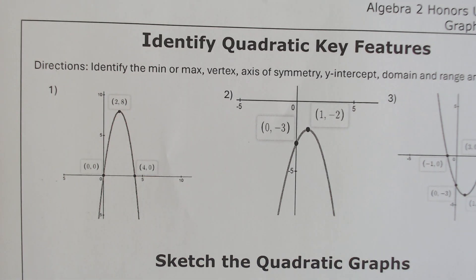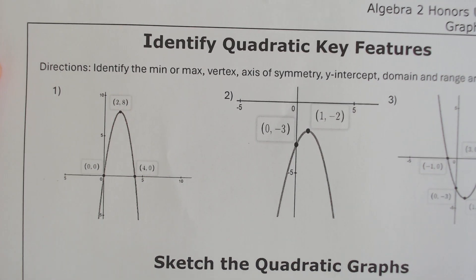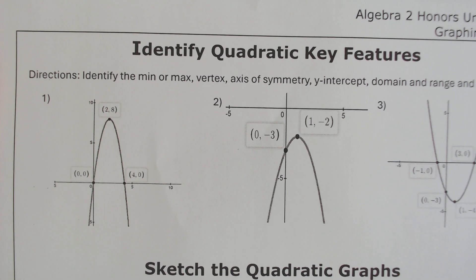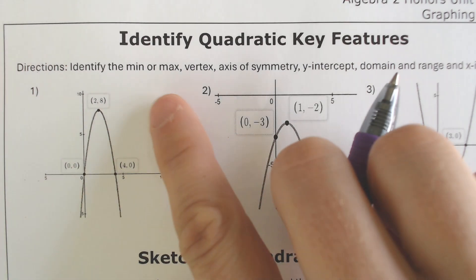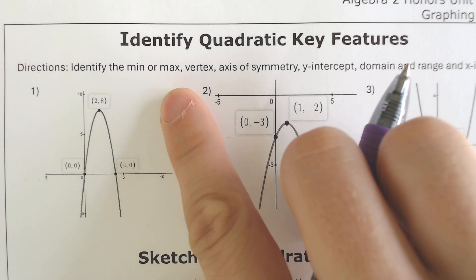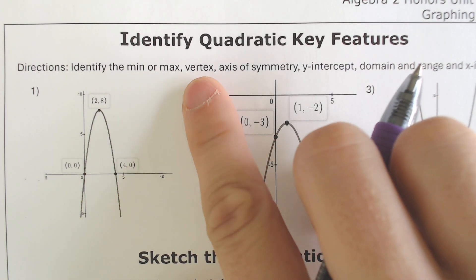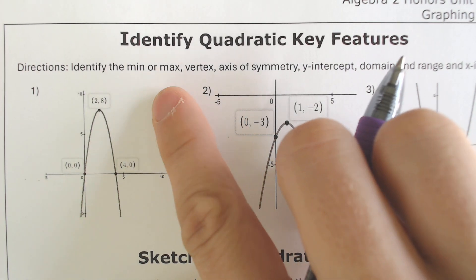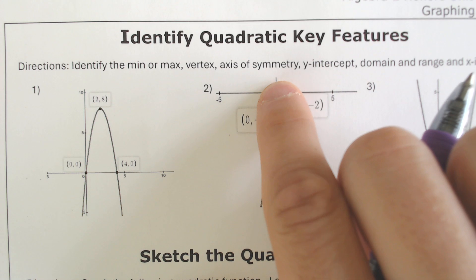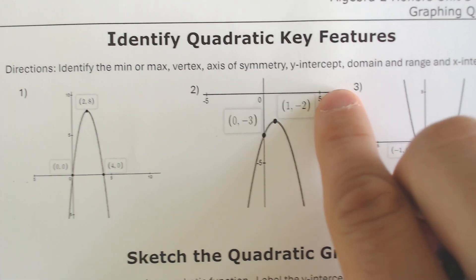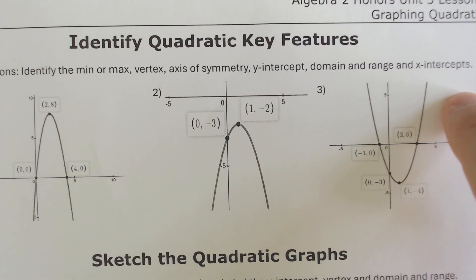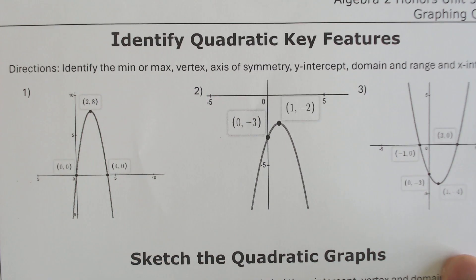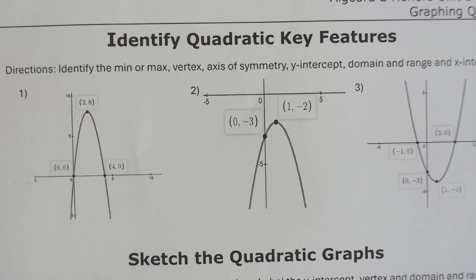Some of the first things we always learn about with quadratic graphs is the minimum or maximum, the vertex, which is also a part of the minimum or maximum, axis of symmetry, y-intercept, domain and range, and some x-intercepts. So we got some graphs, so we can pretty much label them.